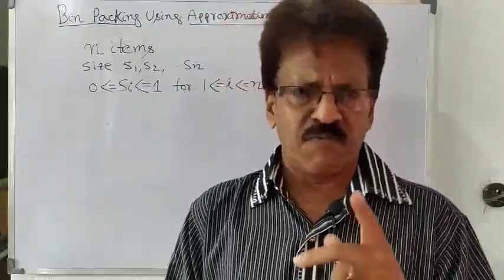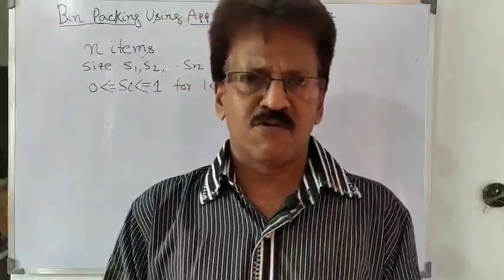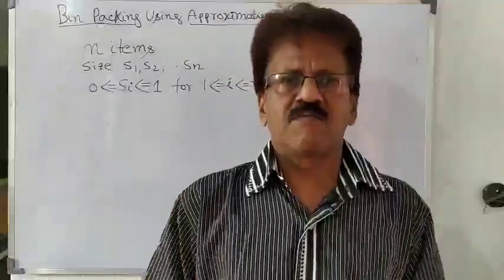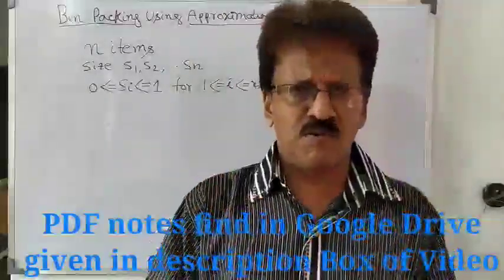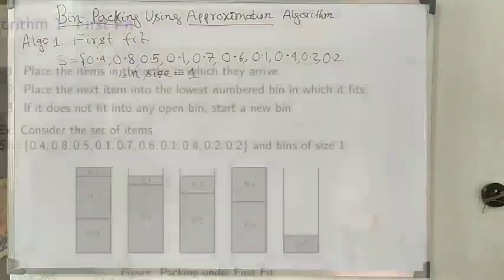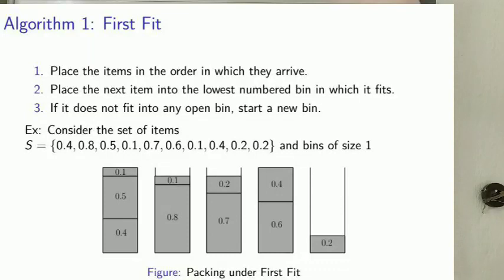The PDF notes are available via the Google Drive link in the description box — you can download and print them. Now look at the First Fit algorithm. Step one: place items in the order in which they arrive. Step two: place the next item into the lowest-numbered bin in which it fits. Step three: if it does not fit into any open bin, start a new bin.